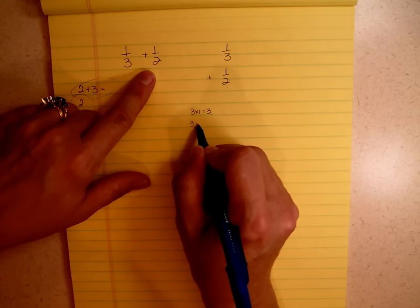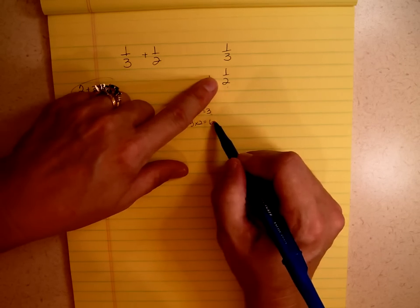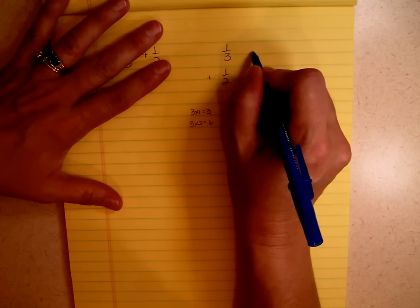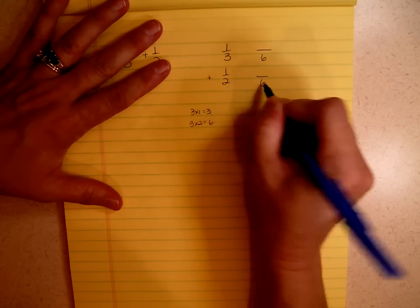Then we're going to go three times two, which gives me six. Is two a factor of six? Yes. Which means that six is my least common denominator.